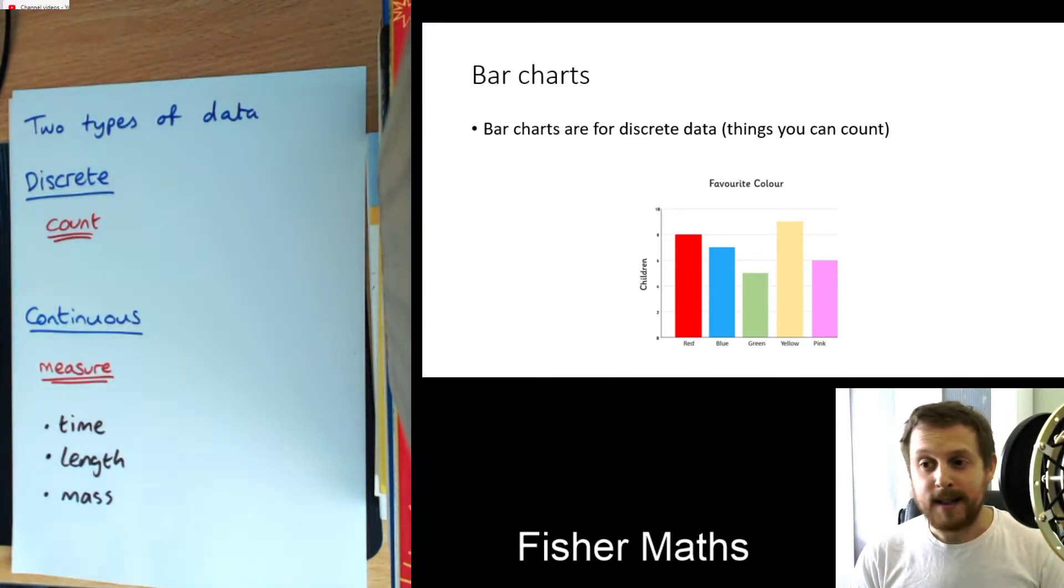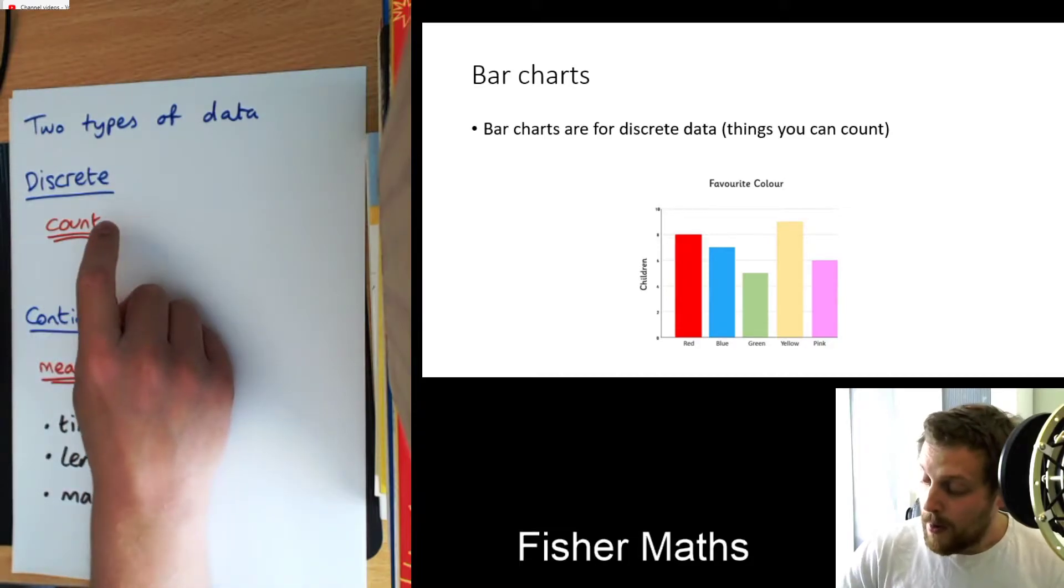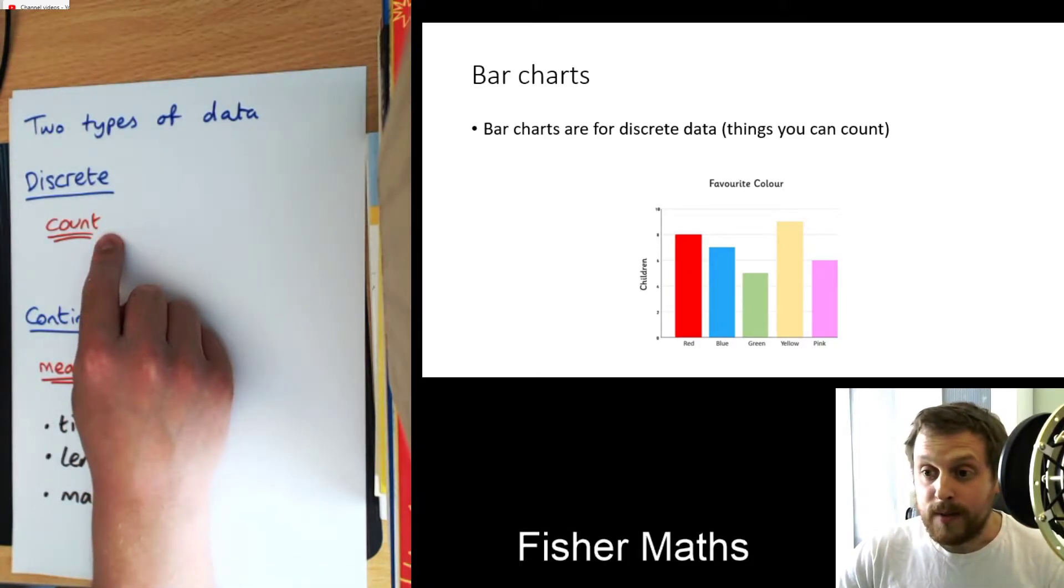Discrete data, on the other hand, as I said before, stuff that you count. You know, you go to the park, you count how many trees there are. You open a packet of sweets and you count how many sweets there are inside. There's no measuring going on. There's just counting.